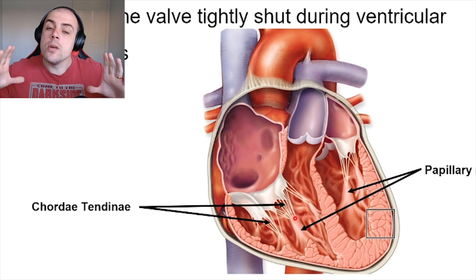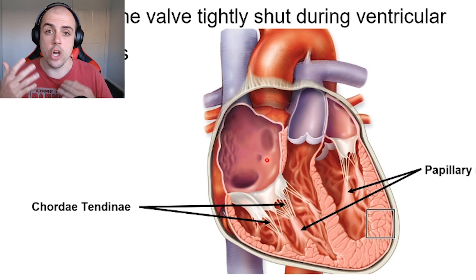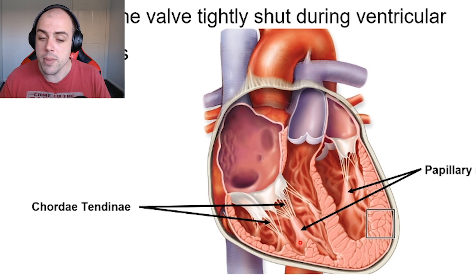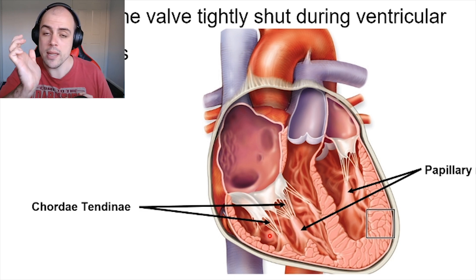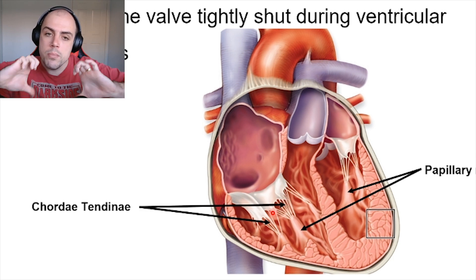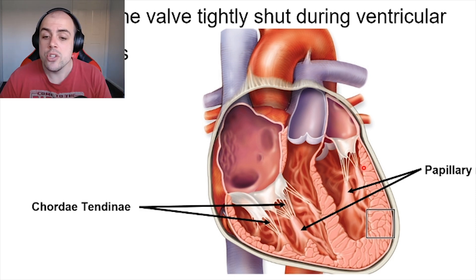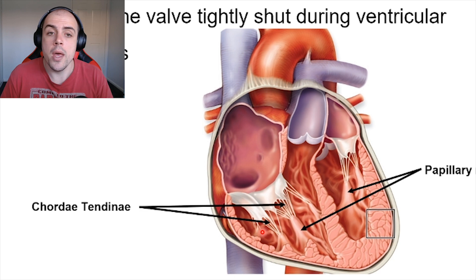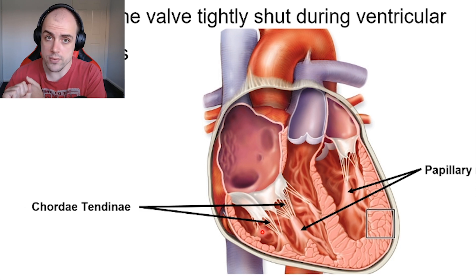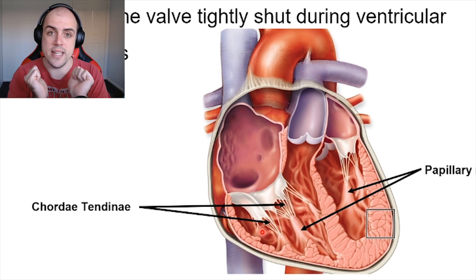When the ventricles contract, the blood wants to move forward down its pressure gradient, but the papillary muscles also constrict simultaneously with the ventricles. The chordae tendineae pull on the valve cusps, causing them to snap closed — and this snapping is part of the heart sounds that we hear. To recap: the papillary muscles and chordae tendineae ensure that our atrioventricular valves — the tricuspid and mitral valves — snap closed during ventricular contraction.